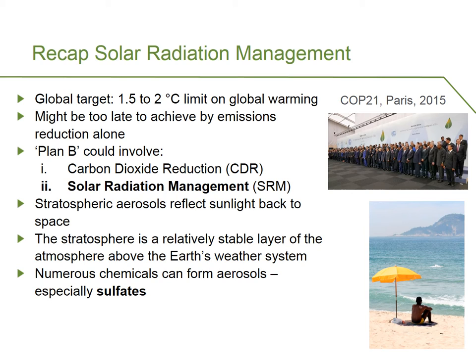Aerosols in the stratosphere can reflect sunlight back to space. We recall that the stratosphere is a relatively stable area of the atmosphere above the Earth's weather system. So aerosols there would tend to persist for a long time. And there are numerous chemicals that can be used to form these kinds of aerosols that can reflect the sun rays back to space, especially sulfates. So compounds of sulfur, sulfur dioxide, hydrogen sulfide injected to the stratosphere can form sulfates, which are actually very good at encouraging the formation of aerosols, which are good at reflecting sunlight back to space.